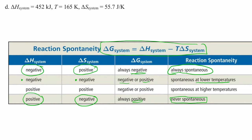And the last scenario is when delta H is positive — so that's endothermic, going in a direction against nature — but delta S is positive. That's going in a direction that nature prefers; it's becoming more disordered. We're making lots of gases from liquids and solids, so nature prefers that. These reactions will be spontaneous, but only at higher temperatures. So delta G could be negative or positive, depending upon the temperature.